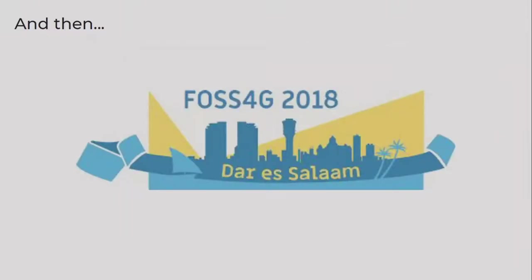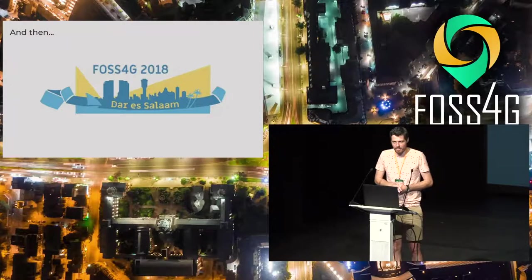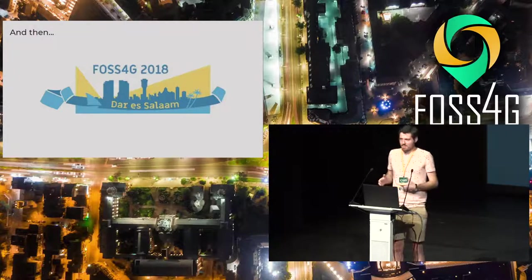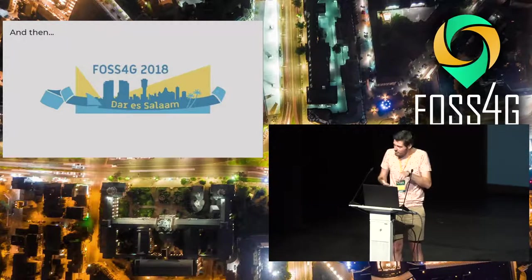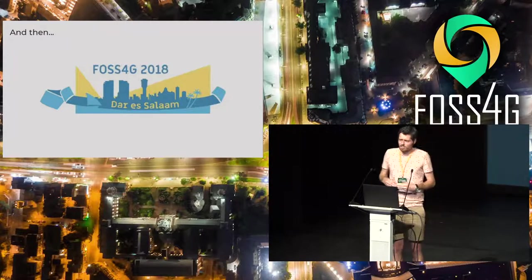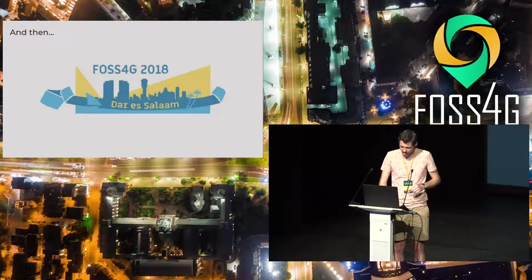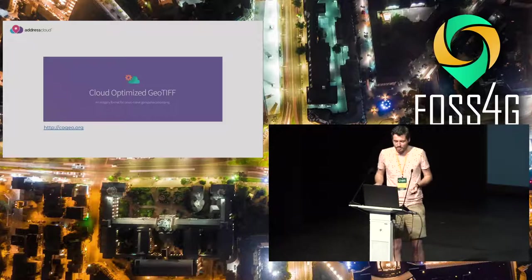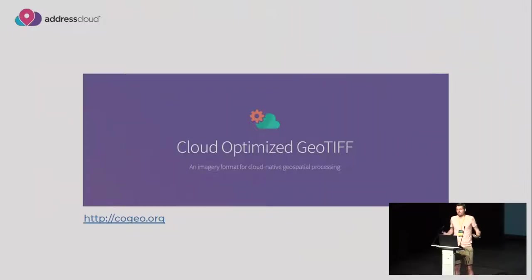Luckily, I was at a previous FOSS4G. There was a chap called Alex Leith, who I think has just given a presentation, who was talking about geopackages and mentioned this thing called COGs. That was the first time I'd heard of a cloud-optimized GeoTIFF. I made some notes diligently, filed that away, and then a few months later, facing this problem, I thought: is there some new raster specification? Oh yeah — FOSS4G. So, enter the cloud-optimized GeoTIFF. I'm really pleased that there have been brilliant talks here giving details about how a COG and a TIFF file under the hood works.